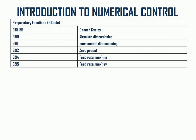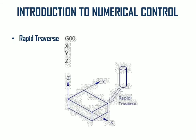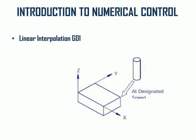Here we are going to understand what is G00 rapid traverse. If the tool is at a random position in a machine and we need to call the tool to the machining point, then that non-machining movement of the tool from the random position to the machining point is done using the G00 code — rapid traverse. For linear interpolation, a tool needs to move from one point to another point by a machining operation in a single straight line.